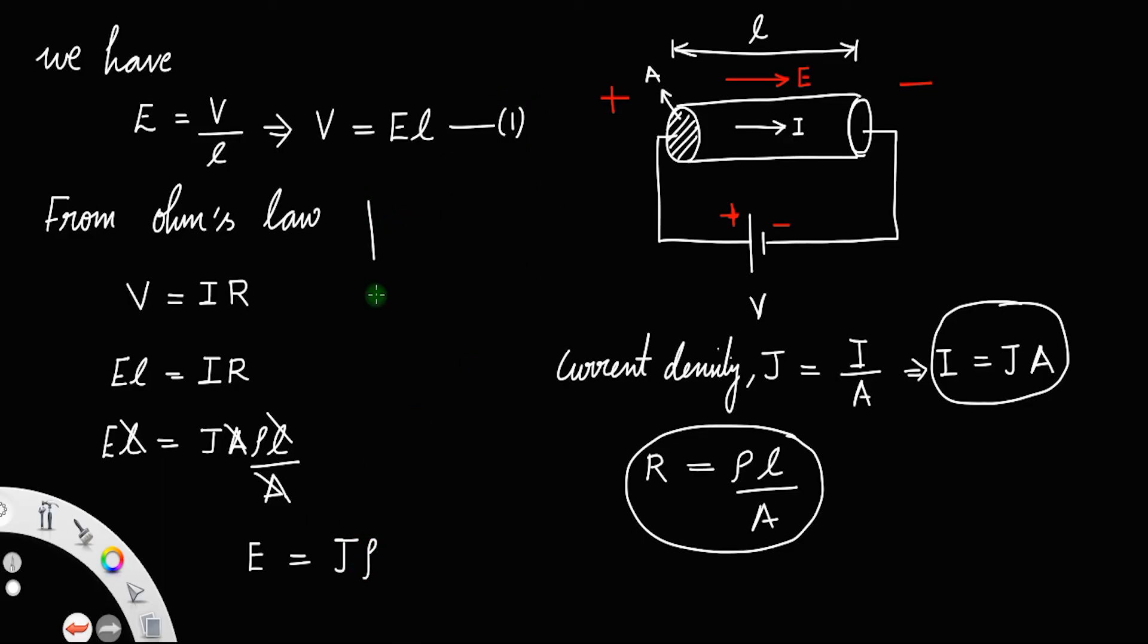You can write this as J times ρ equals electric field, or J equals 1 by ρ times electric field.